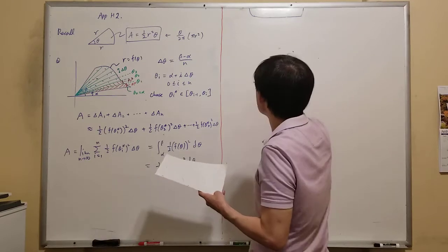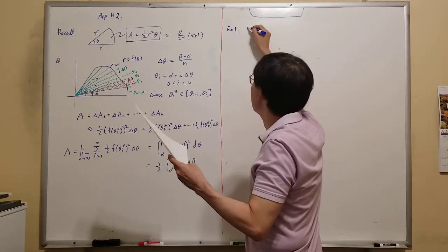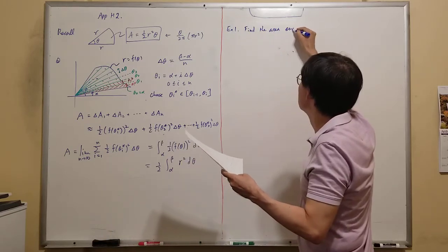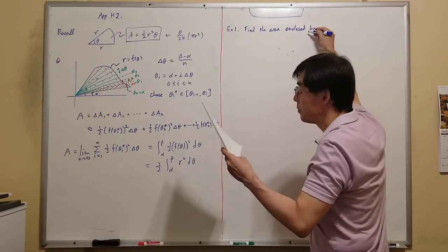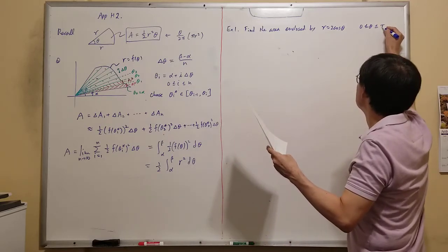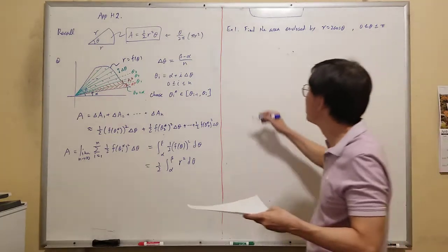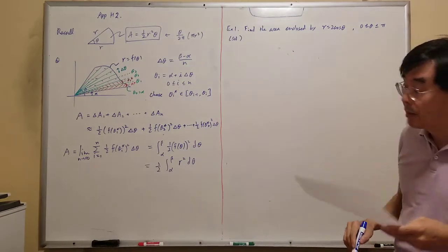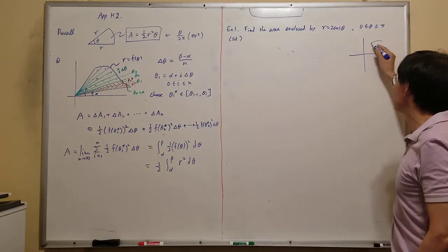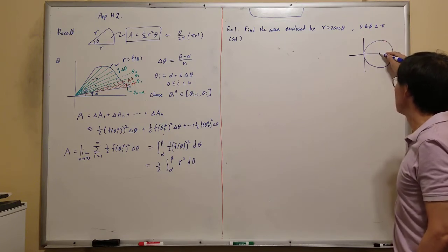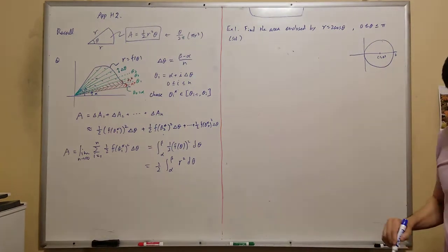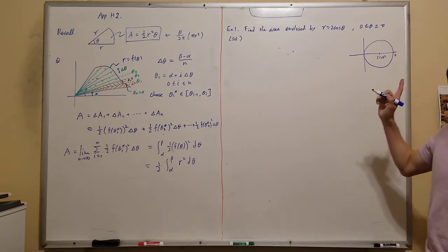Let's do Example 1. Find the area enclosed by r = 2cosθ. From the previous section H1, we learned that this is actually a circle centered at (1, 0) with radius 1. So we know the answer must be π·r² = π·1² = π.